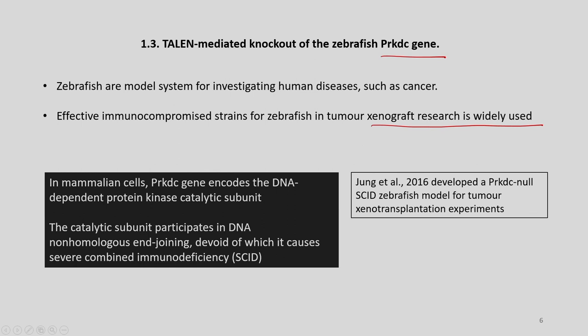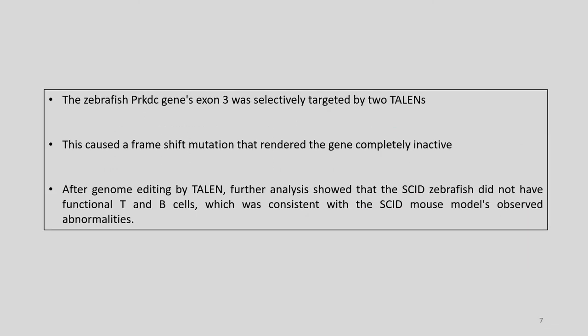The catalytic subunit participates in DNA non-homologous end joining, without which it causes severe combined immunodeficiency (SCID). Zhang et al. developed a PRKDC null SCID zebrafish model for tumor xenotransplantation experiments. The zebrafish PRKDC gene's exon 3 was targeted by two TALENs, causing a frameshift mutation that rendered the gene completely inactive. Further analysis showed that the SCID zebrafish did not have functional T and B cells, consistent with SCID mouse models.